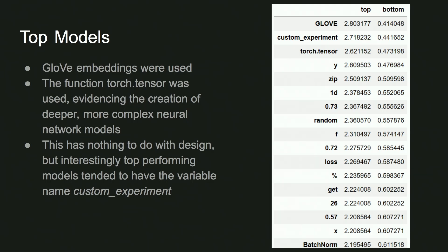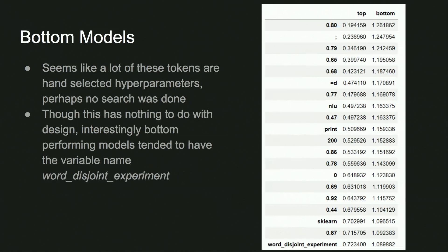For the top submissions, GloVe embeddings were being used very frequently. From variable names such as torch.tensor, they probably played around with neural network frameworks. The top submissions had the variable name 'custom experiment' a lot, which we thought was pretty interesting.